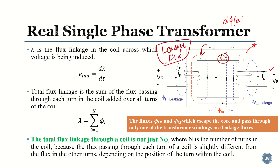The leakage flux exists on both the primary side — represented as phi_pl (primary leakage flux) — and on the secondary side. Because of this leakage flux, not all of the generated flux couples the input voltage to the output. These fluxes escape the core and pass only through the windings.